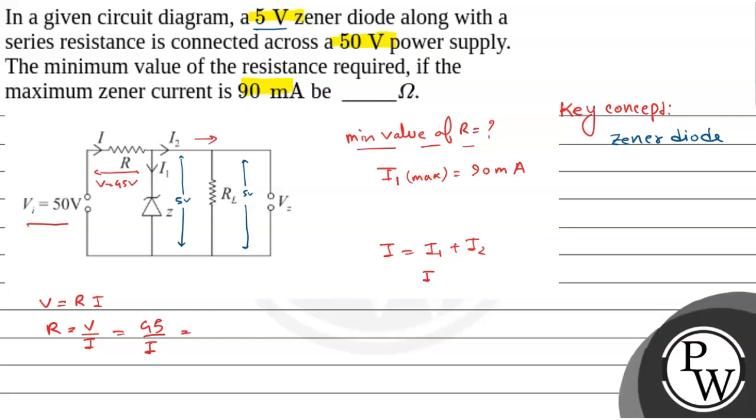For I1 to be maximum, RL should be infinity. So if RL is infinity, I2 will be zero. And in that case, only I1 will be maximum.